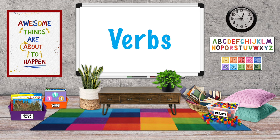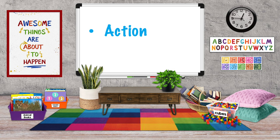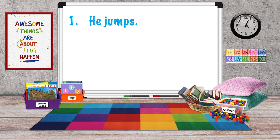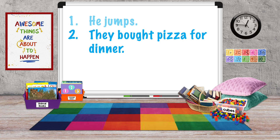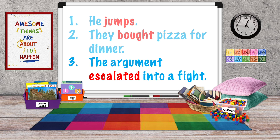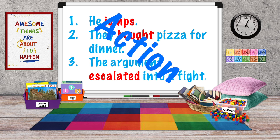Verbs are mainly used to show action or state of being. Action is easy. He jumps. They bought pizza for dinner. The argument escalated into a fight. Our verbs are jumps, bought, and escalated. All three show action.